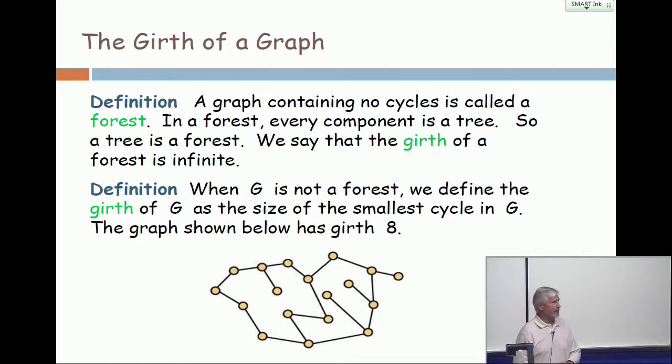One on the right, I think, has size eight. The one on the left has size nine. So the girth of a graph is the smallest cycle. The size of the smallest cycle. So that one has girth eight.